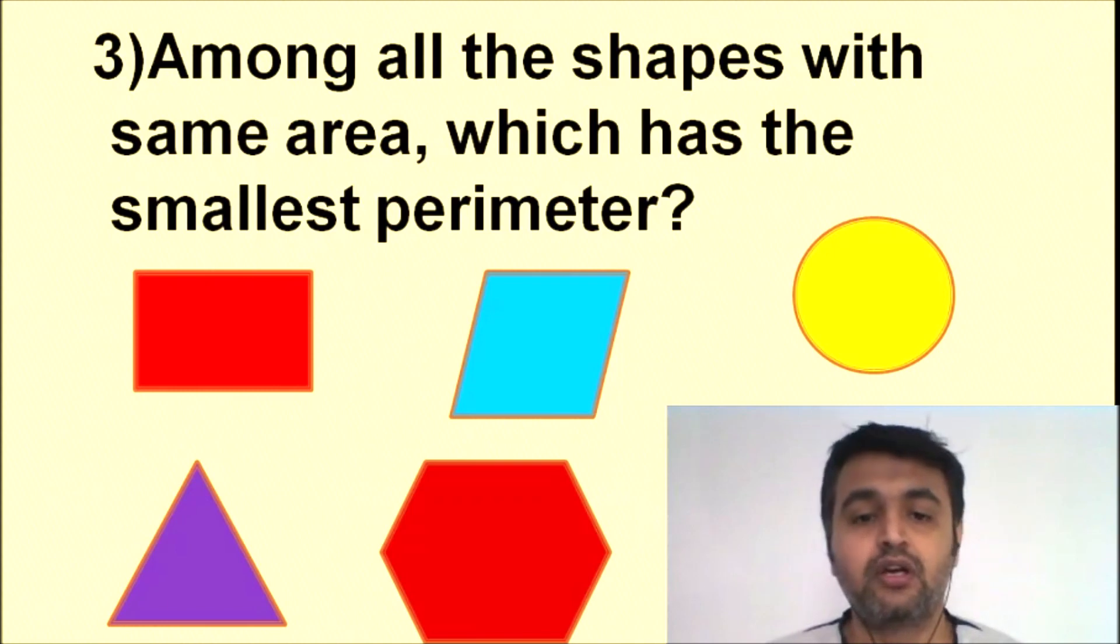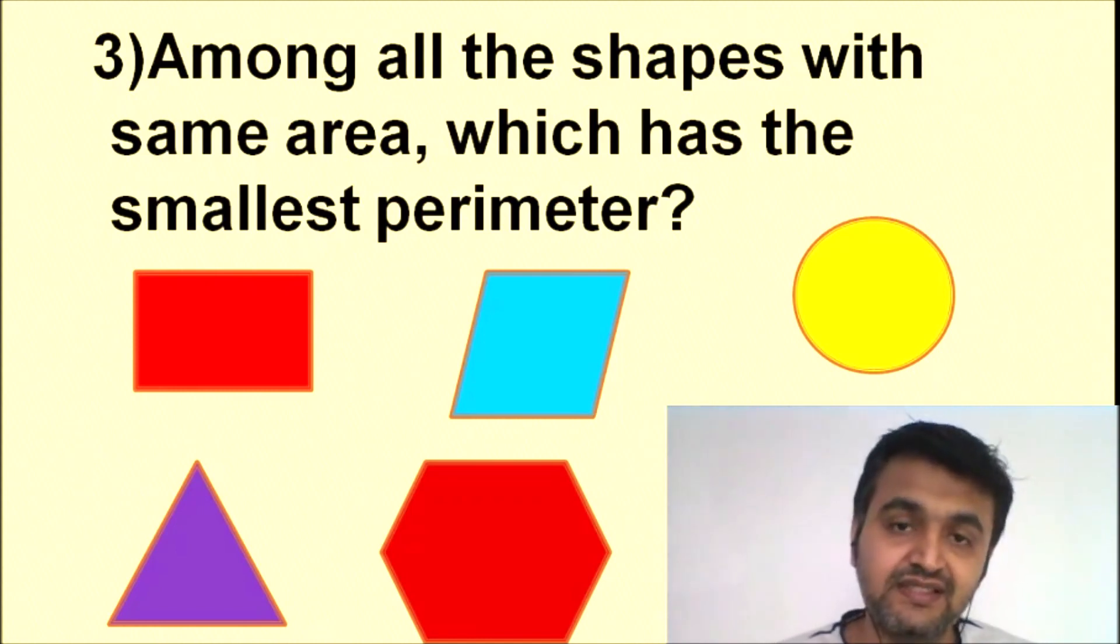Then if you take all the objects of same volume, sphere will be the one with the least surface area. So the fact which is true in the two-dimensional space also remains true in the third dimensional space. That's a good thing. That's the cool fact - this one I really liked so I put that in the slide.